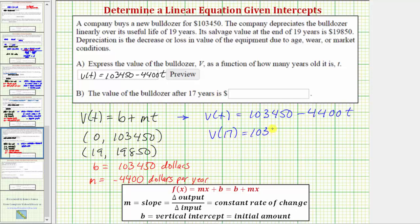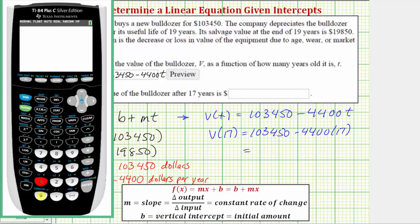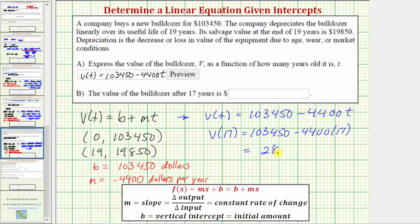So, we'd have 103,450 minus 4,400 times 17. So, let's evaluate this on the calculator. So, 103,450 minus 4,400 times 17, which gives us 28,650. And, of course, the units here would be dollars. So, for part B, because we already have the dollar sign here, we only enter 28,650.